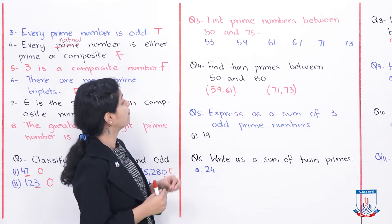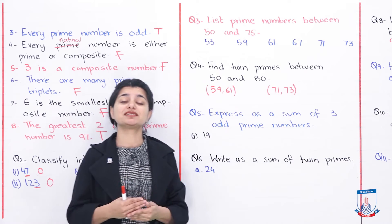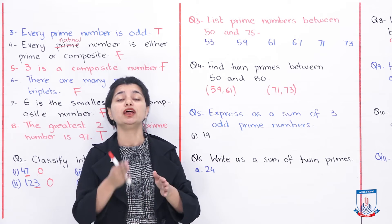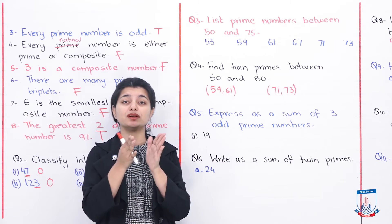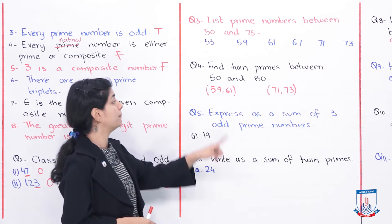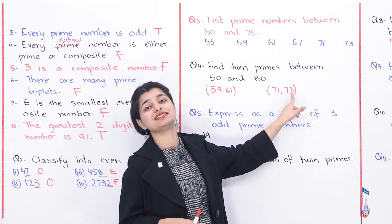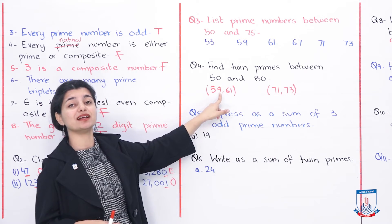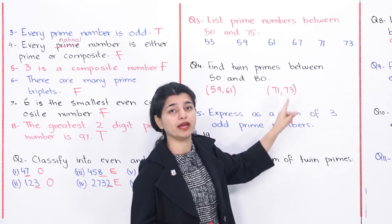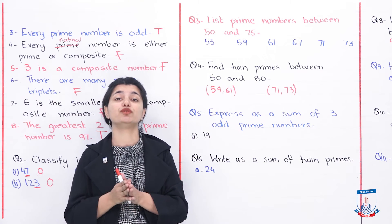The next part asks you to find twin prime numbers between 50 and 80. Look at the same table and find prime pairs with a gap of just 2. There are two twin prime pairs in this range: 59 and 61 — with 60 between them — and 71 and 73, with 72 between them.